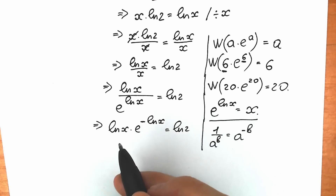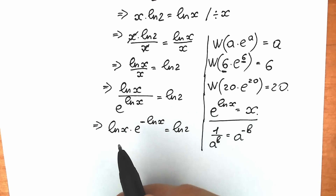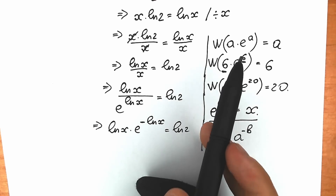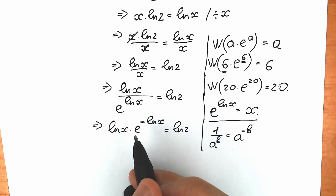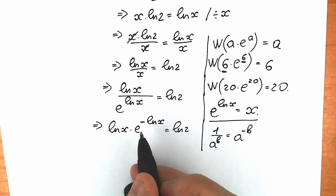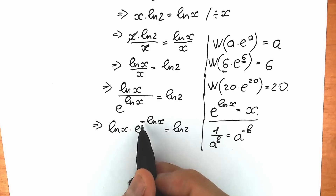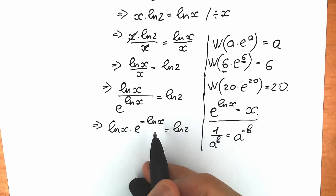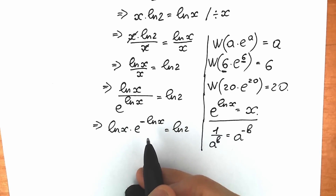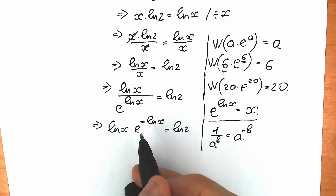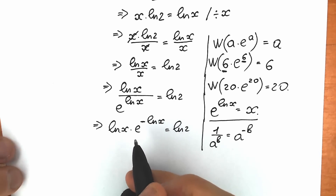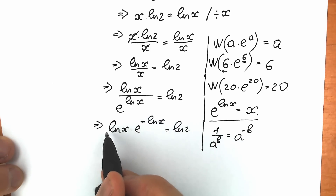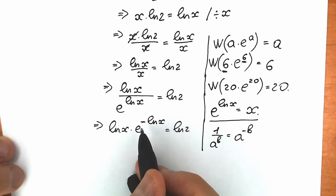Right now, a lot of students make this mistake — they apply the Lambert W function immediately because we have natural log x, e, and natural log x. But if you look closely, here we have a minus sign: negative natural log x. So this means we're talking about a completely different expression. Natural log x and negative natural log x are completely different things — in algebra and in geometry, because we're talking about the opposite sign, which is a completely different graph.